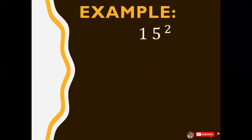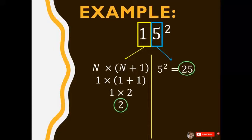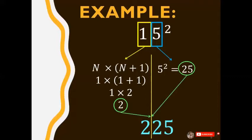For example, solve for 15 squared. Remember the formula: N times N plus 1. So we have 1 times 1 plus 1. That is 1 plus 1 equals 2, and 1 times 2 is 2. And remember, what are we going to do with the units digit? We're going to get its square. So 5 squared is 25. From here, we're going to combine the results. So we get 225, in which 15 squared equals 225. Easy, right?